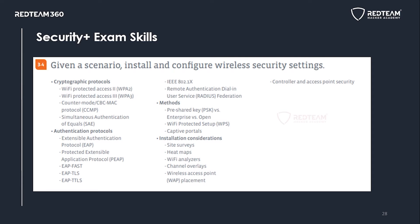After covering secure networks, we move to implementing secure wireless connections. WPA2 and WPA3 are secure wireless protocols. We will discuss how to securely authenticate to wireless devices, covering authentication protocols including EAP, PEAP, different variants of EAP, 802.1X, and RADIUS. We will also cover authentication methods such as passwords, open connections, and captive portals.